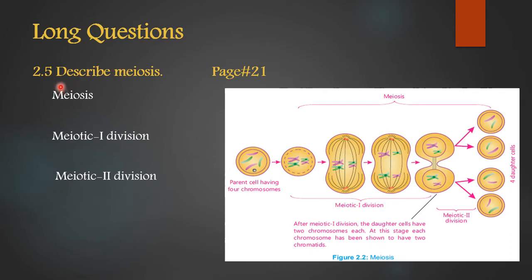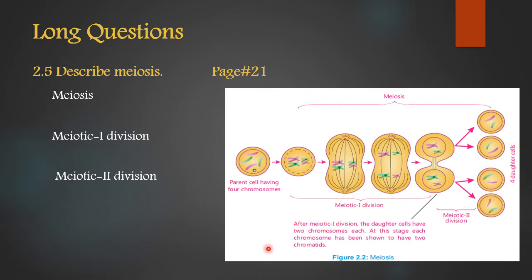Question 2.5: Describe meiosis. Like mitosis, explain meiosis with headings from page 21. Meiosis has two phases — Meiotic Division 1 and Meiotic Division 2 — explain each under separate headings. Include Figure 2.2 of meiosis as the required diagram with this long question.